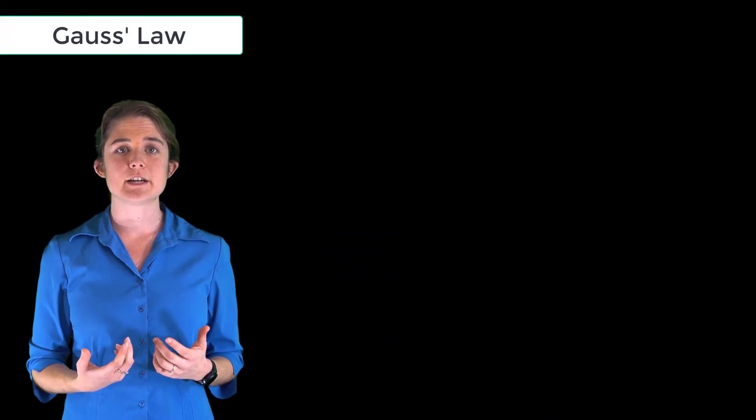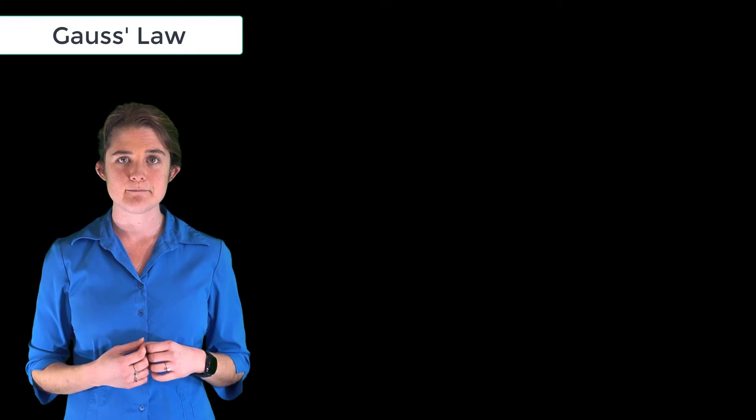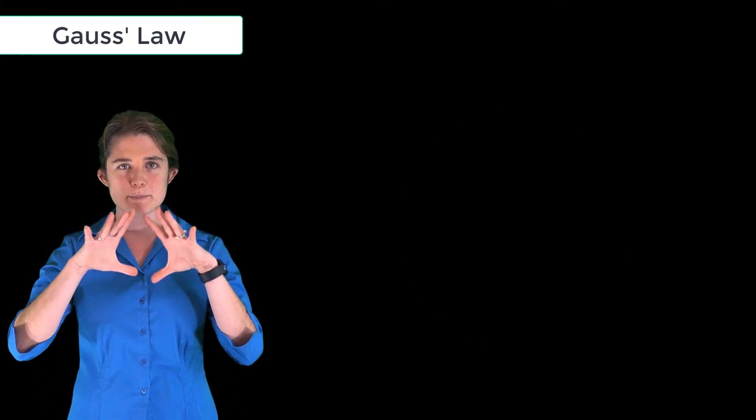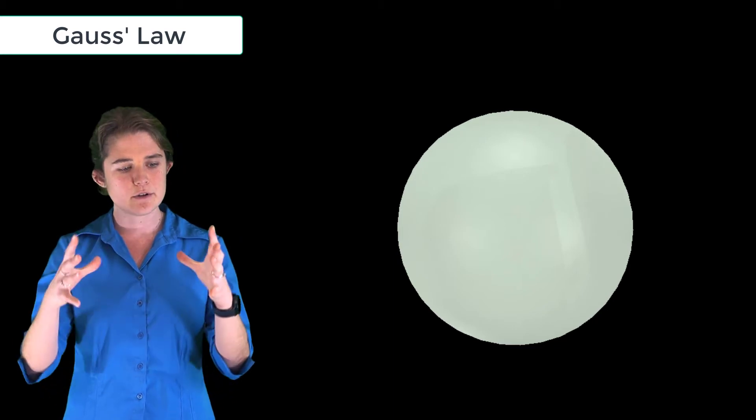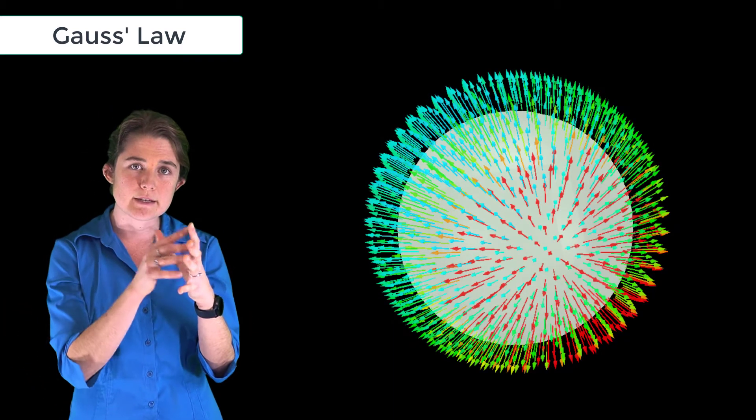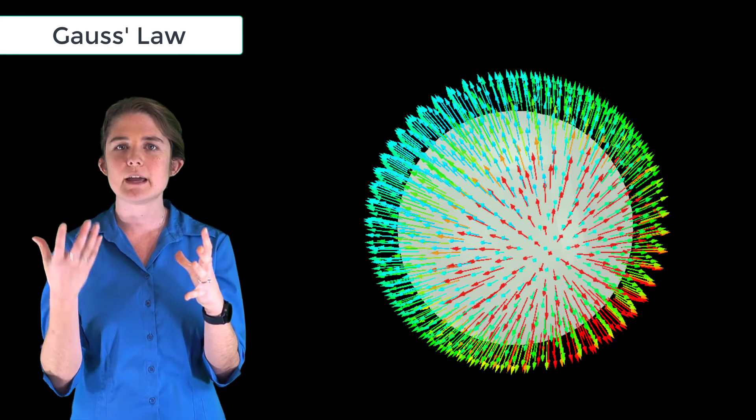The next fundamental law of electrostatics is Gauss's Law. Gauss's Law says that if you build a closed surface surrounding some region of space and you look at the electric field going through that surface, you can calculate how much charge is inside the enclosed region.